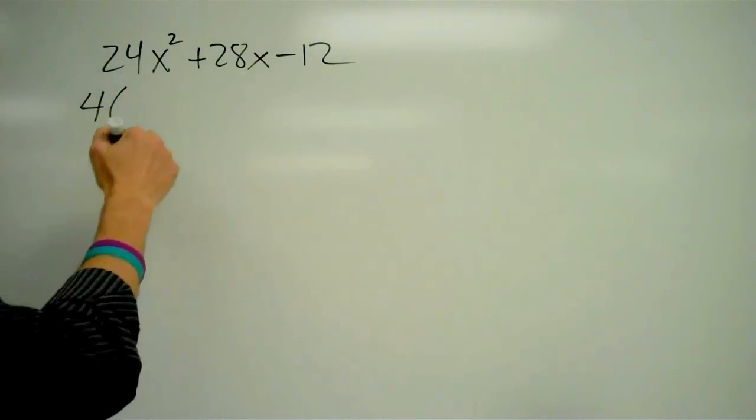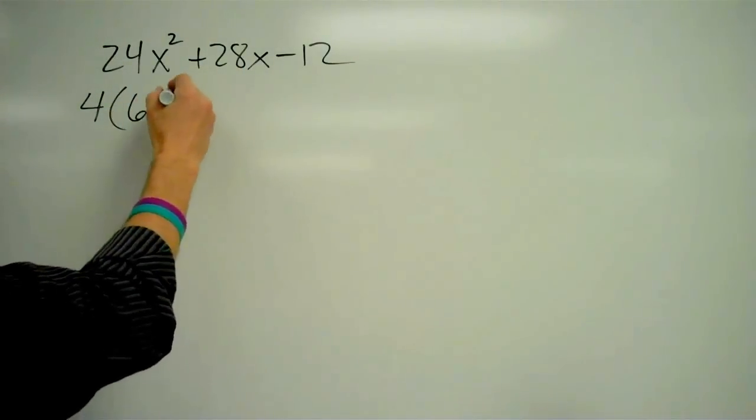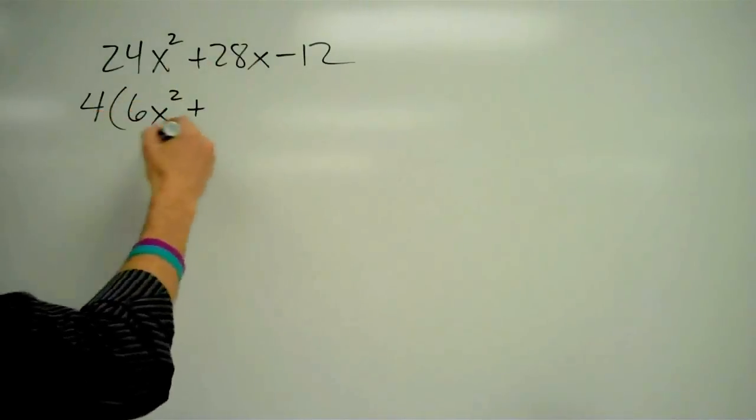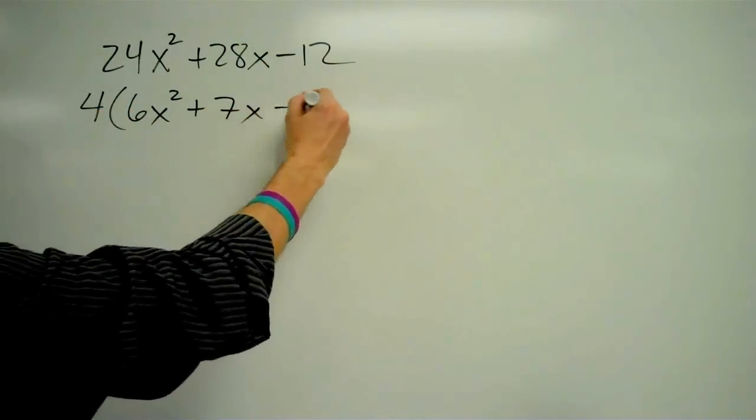So let me just factor a 4 out of the whole thing. 24x squared divided by 4 is 6x squared. 28x divided by 4 is 7x. And negative 12 divided by 4 is negative 3.